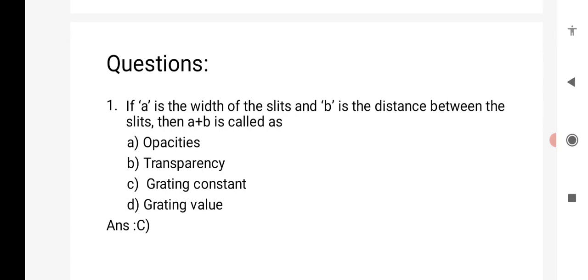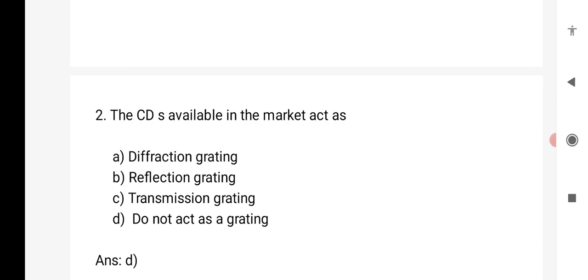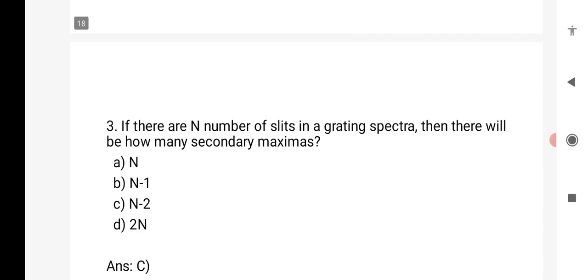Now, a few multiple choice questions related to this concept. First, if A is the width of the slits and B is the distance between the slits, then A plus B is called the grating constant. Second, the CDs available in the market act as diffraction grating or reflection grating or transmission grating, but they do not act as a grating.